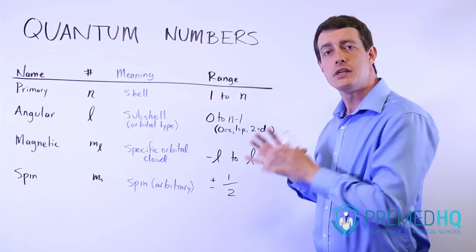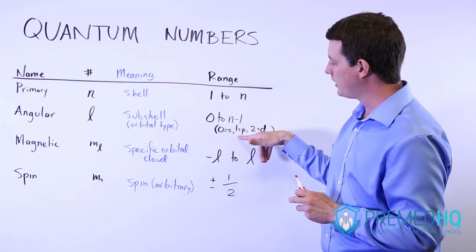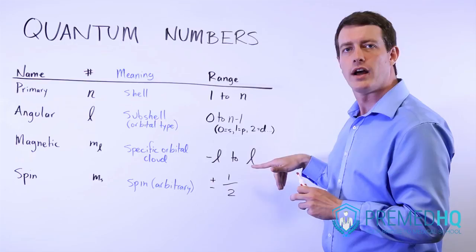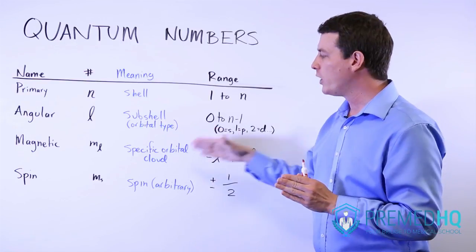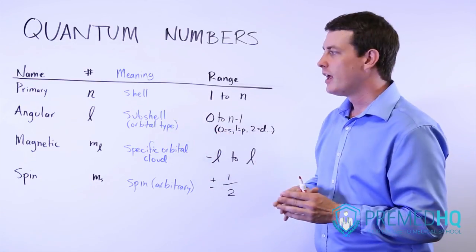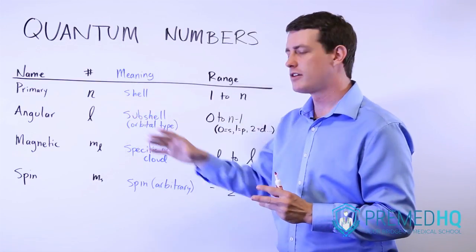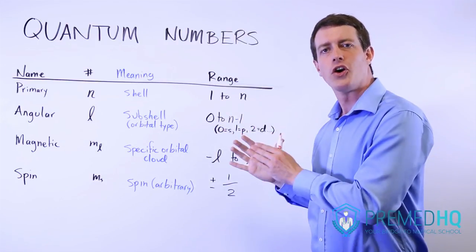Now if you're in the p orbital, then you have the range of values from negative 1 to 0 to 1. And so that means that you have three possible values for which cloud it is in within the p subshell. And so the third one takes you from not just the type of orbital, but which of the exact orbitals are you in.